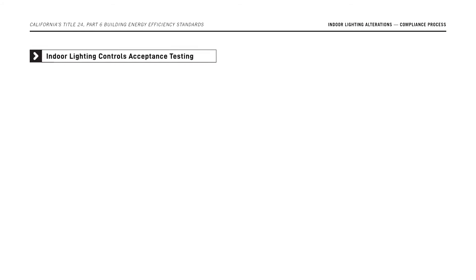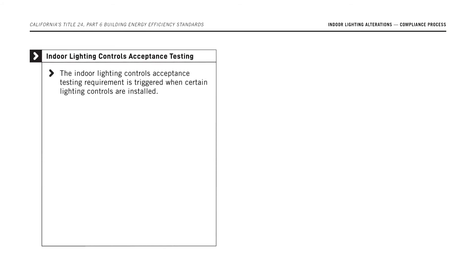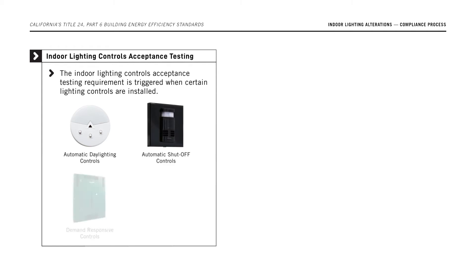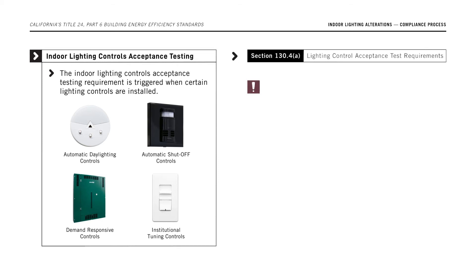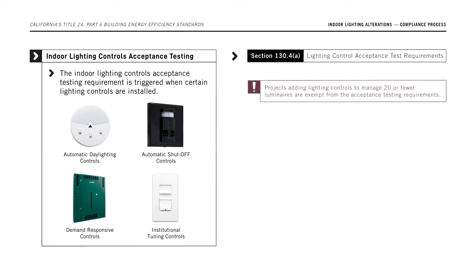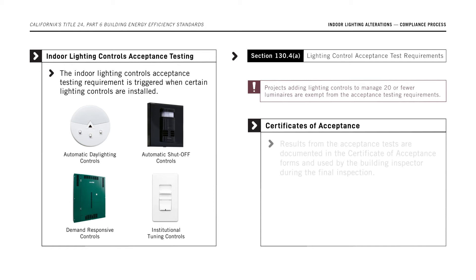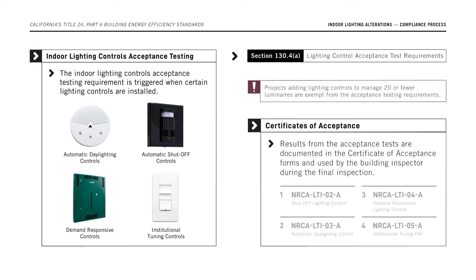The indoor lighting controls acceptance testing requirement is triggered when certain lighting controls are installed. This includes automatic daylighting controls, automatic shutoff controls, demand responsive controls, and institutional tuning controls. These indoor lighting controls must comply with the acceptance testing requirements in Section 130.4. When a project adds lighting controls to manage 20 or fewer luminaires, it is exempt from the acceptance testing requirements. Results from the acceptance tests are documented in the Certificate of Acceptance forms and used by the building inspector during the final inspection.